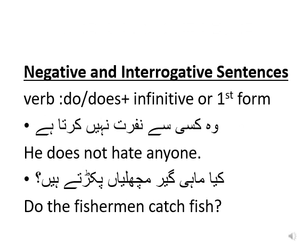The negative and interrogative sentences also end at either 'ta hai', 'te hai' or 'ti hai'. The verb which we use for negative and interrogative sentences is the same — the infinitive form or the first form of the verb. With that, we use the helping verb either 'do' or 'does'. We use 'do' when we have a plural subject and 'does' when the subject is singular.